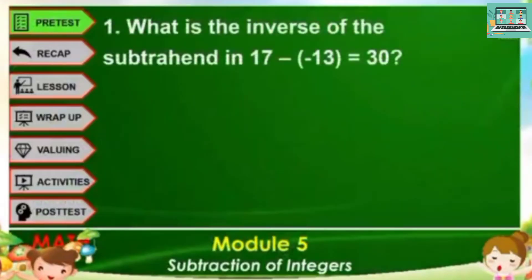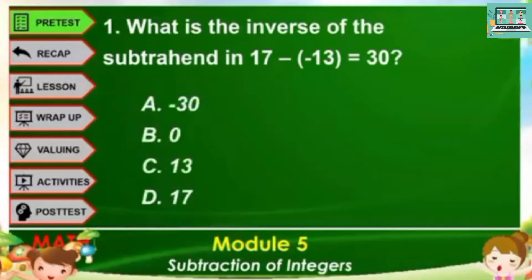Number 1. What is the inverse of the subtrahend in 17 minus negative 13 equals 30? A, negative 30. B, zero. C, 13. D, 17.